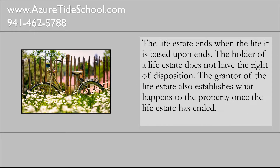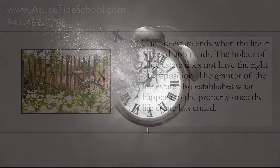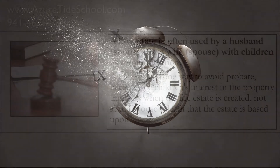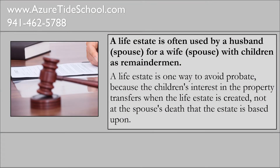The life estate ends when the life it is based upon ends. The holder of the life estate does not have the right of disposition. The grantor of the life estate established what would happen to the property once the life estate has ended. A life estate might be used by a spouse for a wife or spouse with children as a remainderman. A life estate is one way to avoid probate because the children's interest in the property transfers when the life estate is created, not at the spouse's death that the estate is based upon.